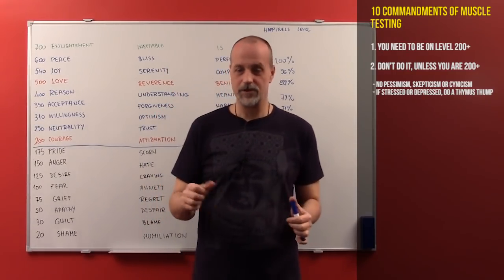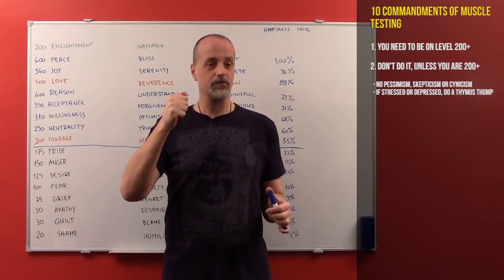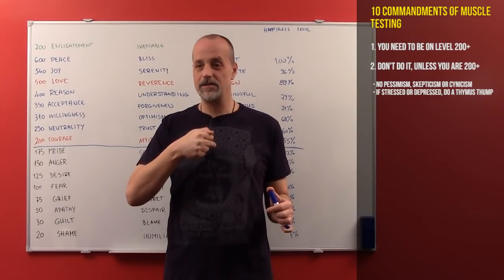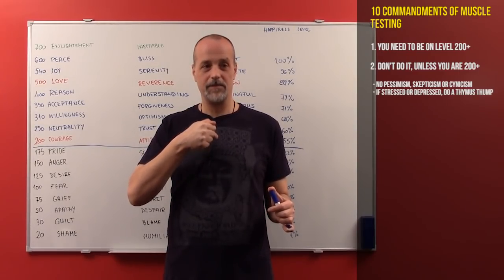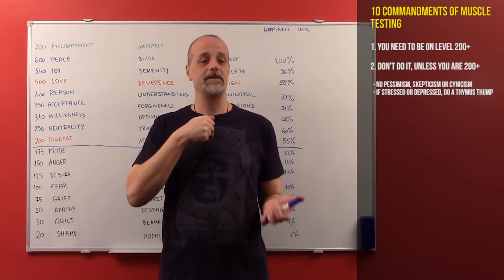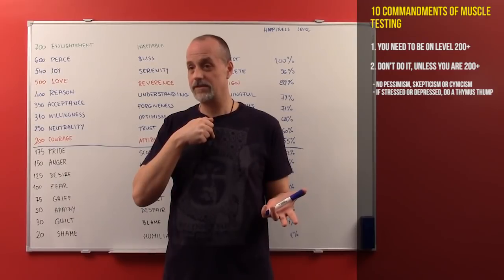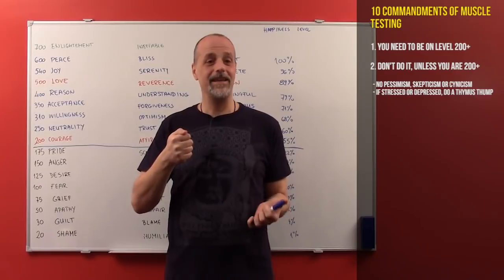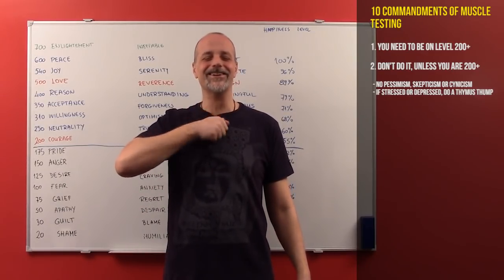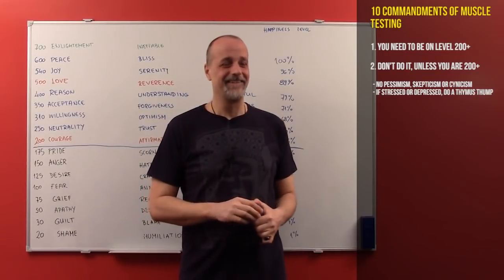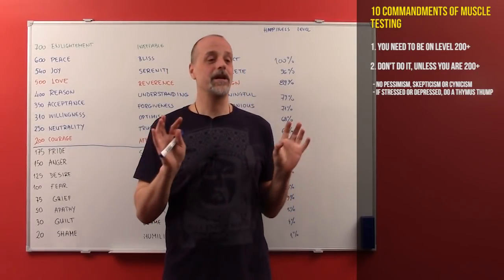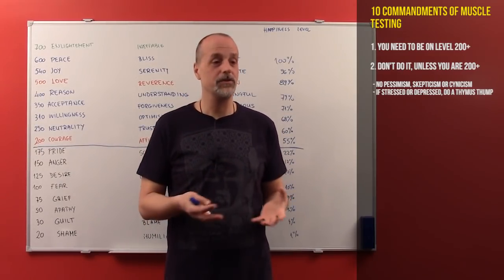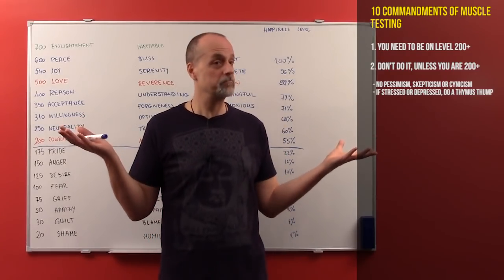Just do this: clench your fist and thump a few times a little bit higher than your heart — don't thump on your heart, but a little bit higher. That's where the thymus gland is located. You smile, you think of someone that you love, and then you do it. It will give you an immediate energy boost, and you can do it whenever you need some additional confidence, for example.